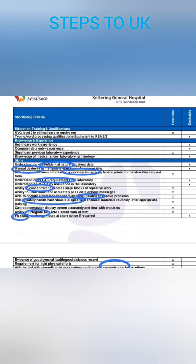This is the last page of the job description. Here they specifically mention what is essential and what is desirable. First, looking at education — they need NVQ level 2, and they are looking for a person who has at least a degree in the particular field. The next one is experience — they definitely look for a person experienced in this particular department, as they need significant previous laboratory experience. We can add these skills in the supporting documents, and only then will we get a chance for an interview.